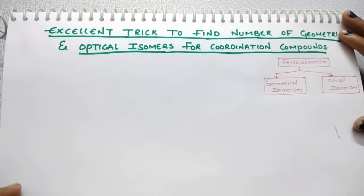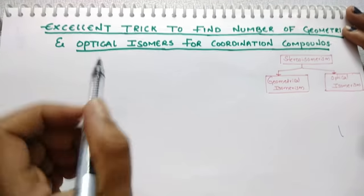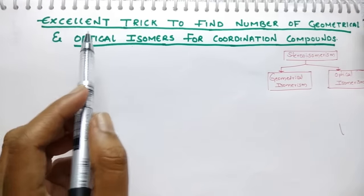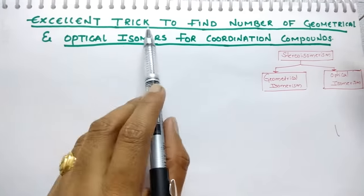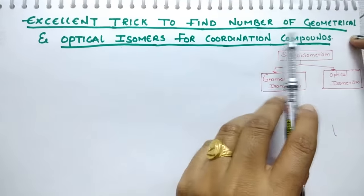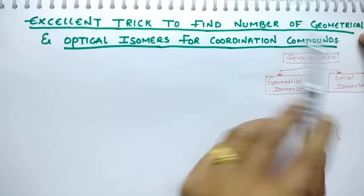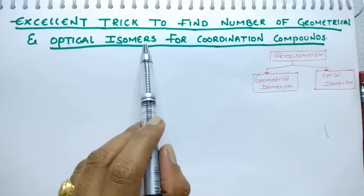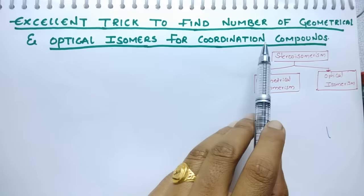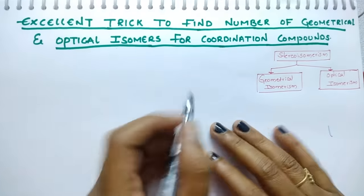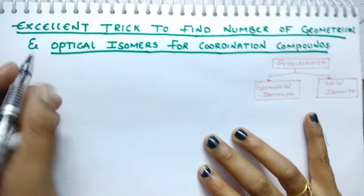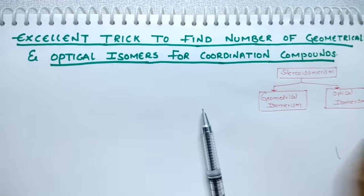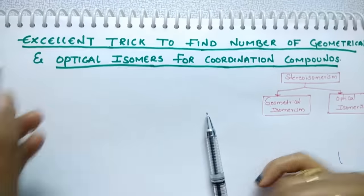Hi students. In today's session I am going to discuss an excellent trick to find the number of geometrical isomers and optical isomers for coordination compounds. Let us start.